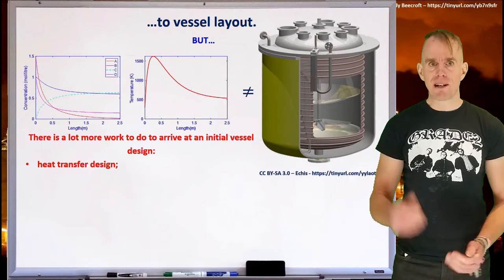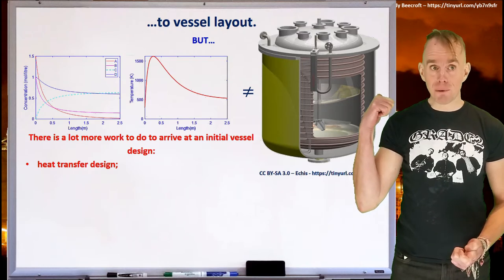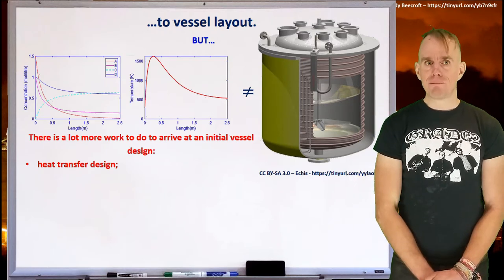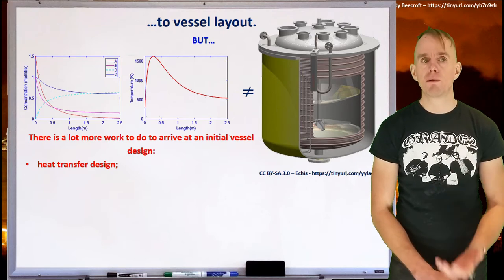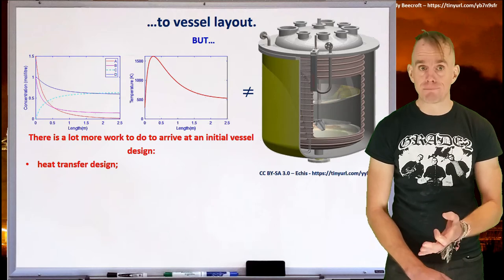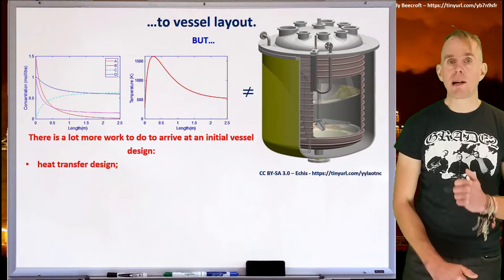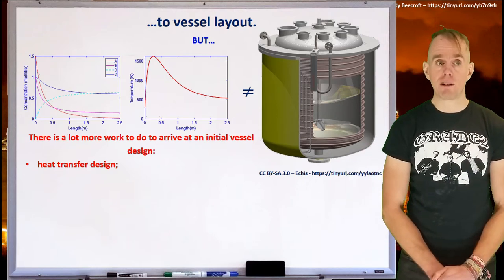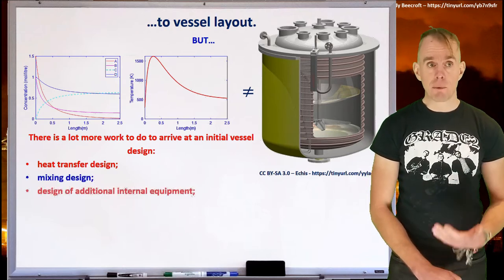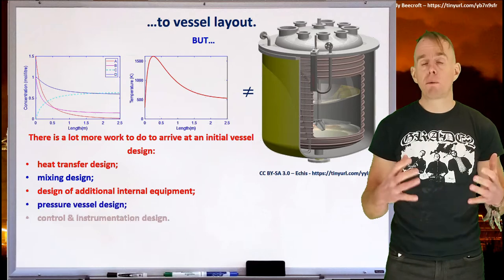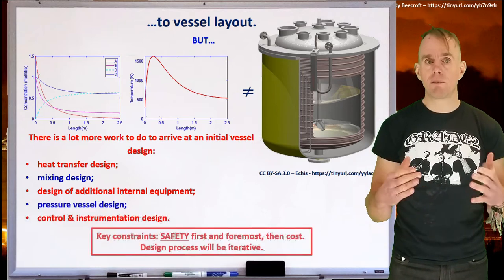Okay, so as you can see from this picture on the board, the ultimate vessel is a rather different beast to just a model output. There's a heck of a lot more to do to arrive at that initial vessel design. So we need to think now in detail about the heat transfer design. We need to think in detail about the mixing design and whether we need mixing. We need to think what other internal equipment may appear inside our reactor.